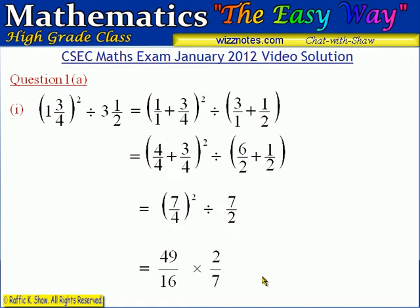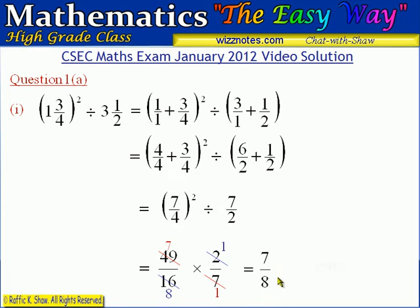Now we have a case where we can divide 7 out of the 49 together with this 7, and then divide 2 out of the 2 together with the 16. We divide 49 by 7 to get 7, and divide 16 by 2 to get 8. The result is 7 multiplied by 1 on the numerator and 8 multiplied by 1 on the denominator, so our answer is 7 over 8. That's the answer for part 1.